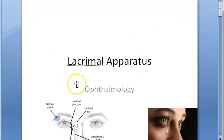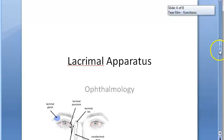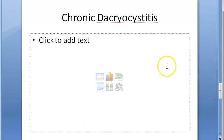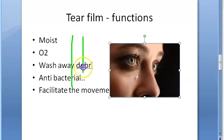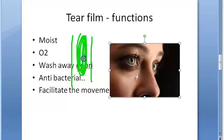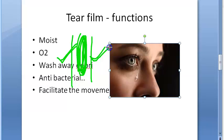The lacrimal gland produces tears, but in the tear film only the middle aqueous part comes from the lacrimal gland. The innermost mucus layer comes from the conjunctival goblet cells and the glands of Manse. The outermost oily layer comes from the Meibomian glands, glands of Zeis, and glands of Moll. So the tear film is different from just the tear.